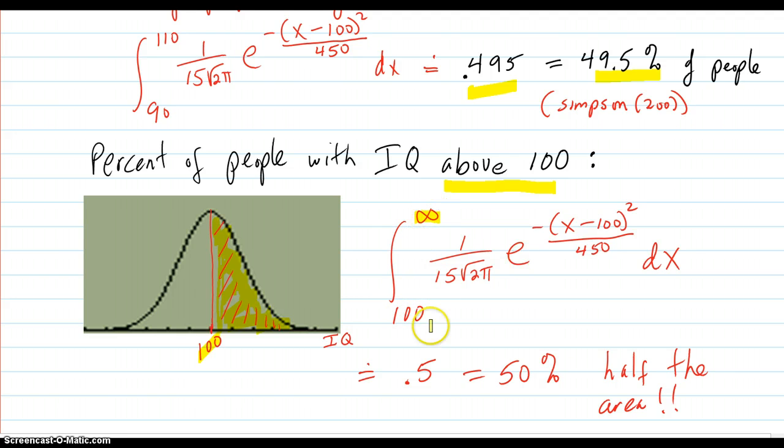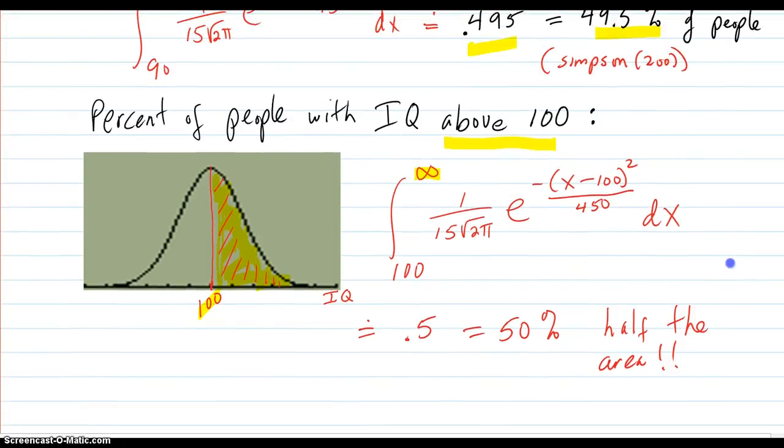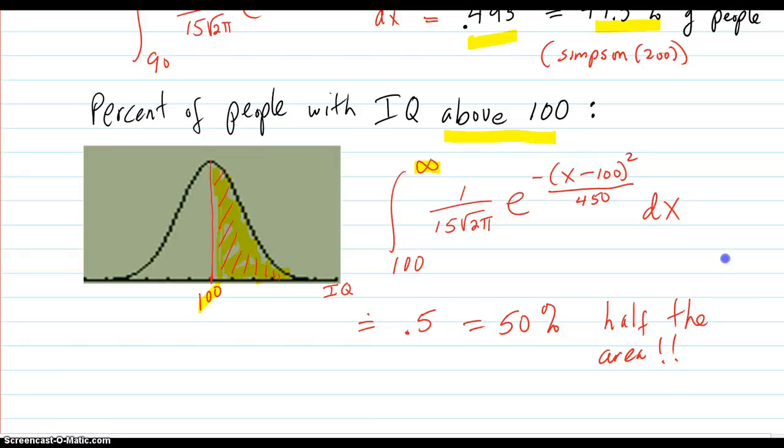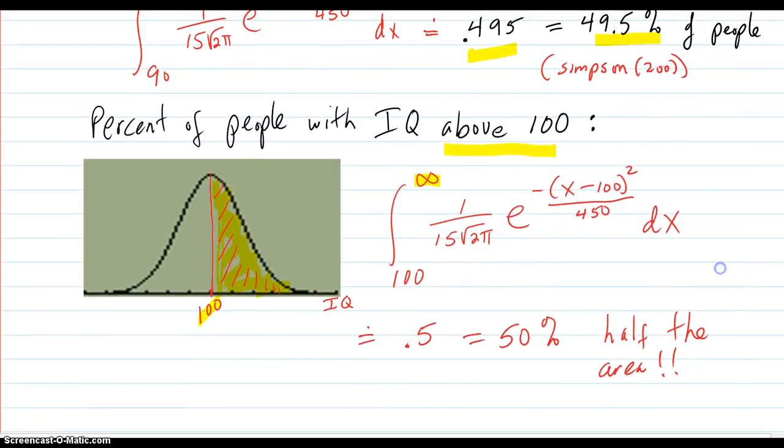And if you run this integral from say 100 to 200, put a 200 up there, sure enough, it's going to be 0.5, 50% half of the area. So that's how your probability density function works and that's how you get IQ scores percentages.